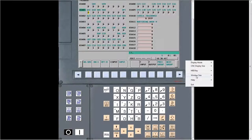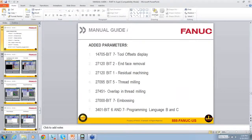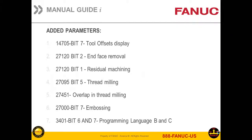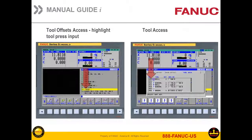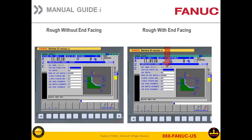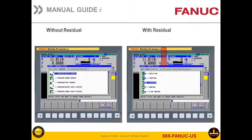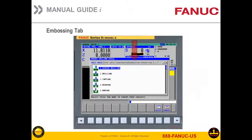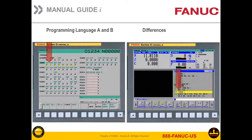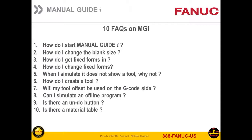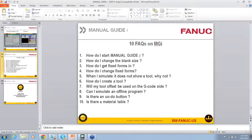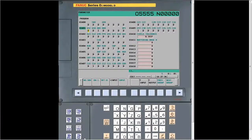Now we go back to our PowerPoint, having covered those fine-tuning parameters. Next I want to go over the ten most frequently asked questions I get all the time through emails or phone calls. The most frequently asked question is how to access Manual Guide I. Usually when you start up a control, you're on the standard FANUC G-code screen. Builders will use graph function key, custom one, or custom two — or sometimes there's a hard key that says MGI. About 90% of the time it's going to be graph, custom one, or custom two.